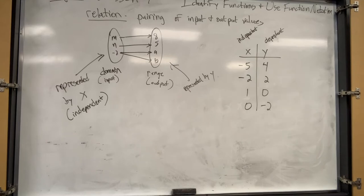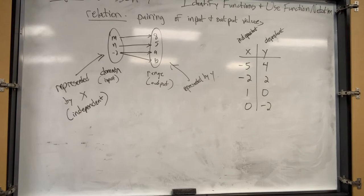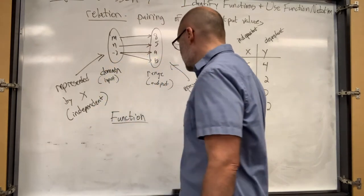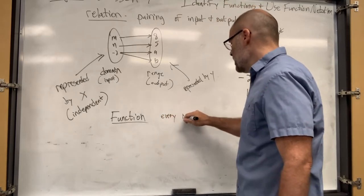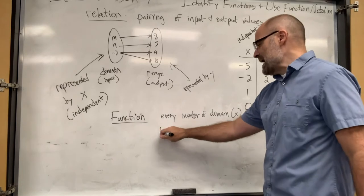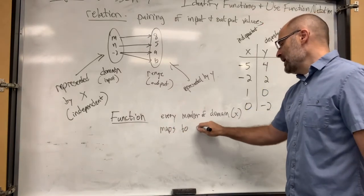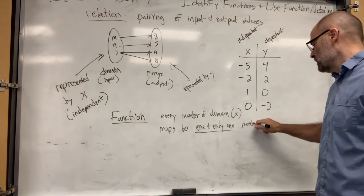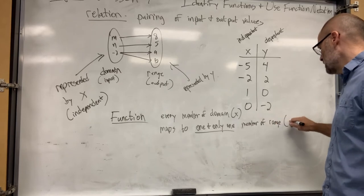Now we're going to identify functions. To identify functions there are rules you have to go by. A function is a mapping between two sets, just like a relation, that associates with each element of the first set - the domain - a unique, one and only one, element of the second set - the range. So every x maps or points to one and only one member of the range, or the y.